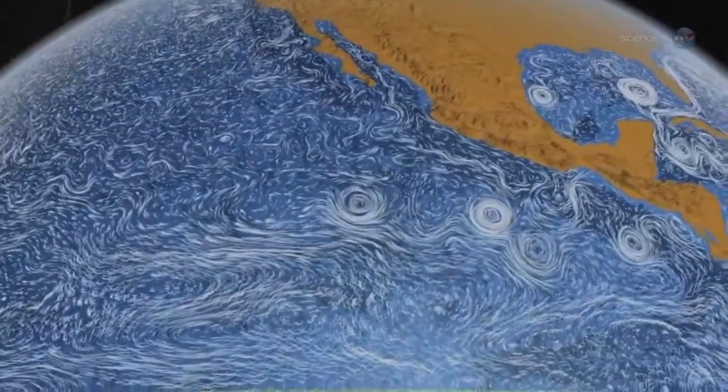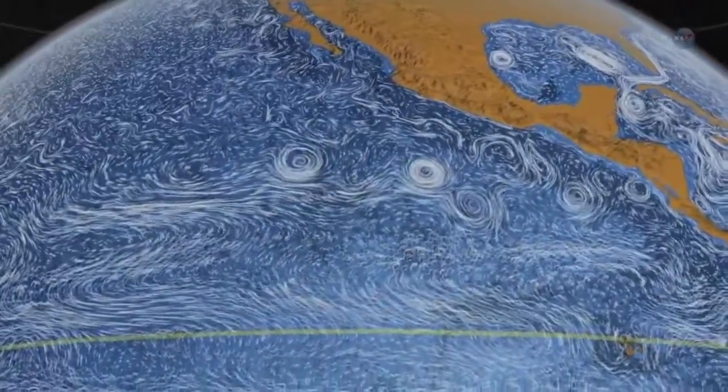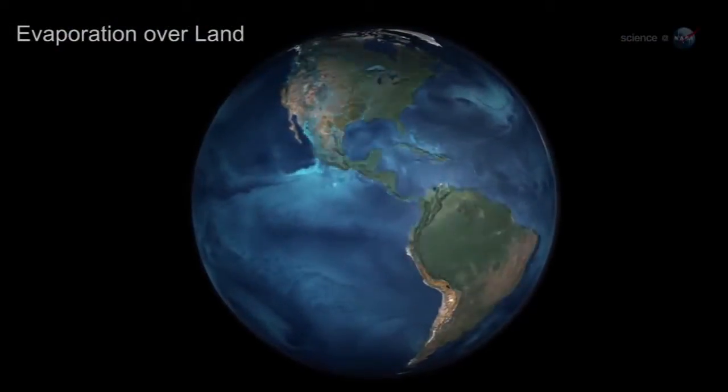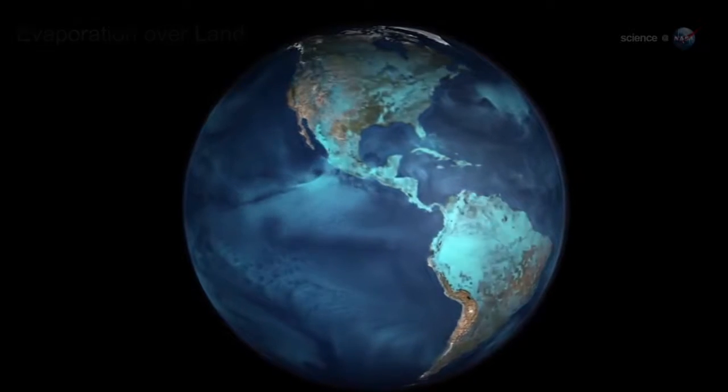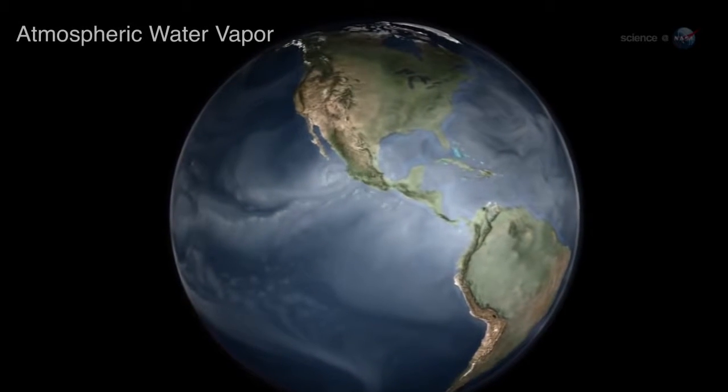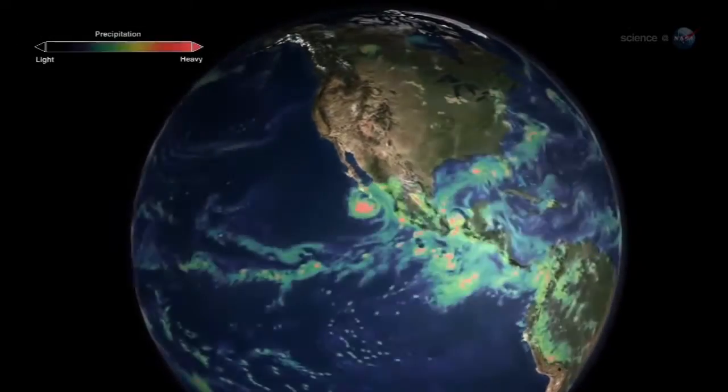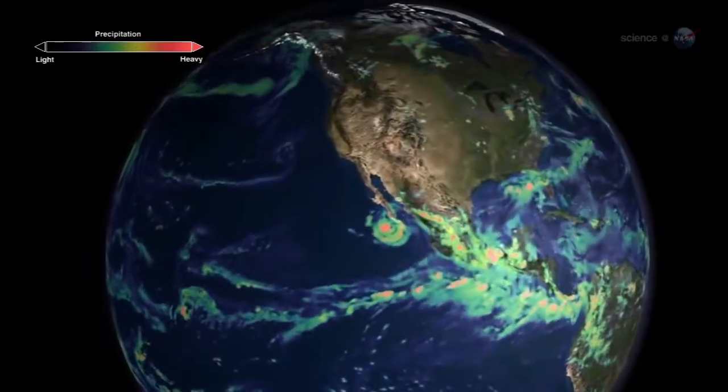As the lifeblood of our planet, water moves with a circulation as complex as that of the human body. Evaporation, condensation, and precipitation transport warmth and moisture from ocean to ice pack, from river to rain cloud, from tributary to tundra, sustaining life and setting the stage for weather and climate.